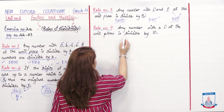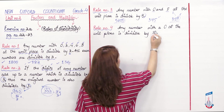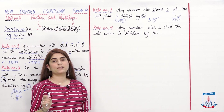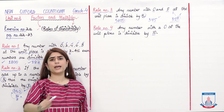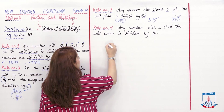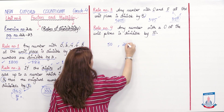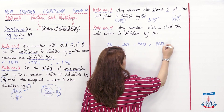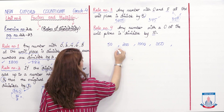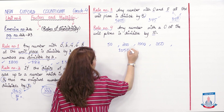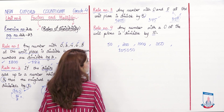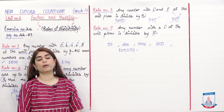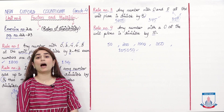Rule No. 4: Any number with 0 at the unit place is divisible by 10. This is the simplest rule. Numbers like 50, 200, 1000, 250, and 1,550 — all end in 0, which means they are divisible by 10. These 4 rules are very important, and you can also read them on page number 20.